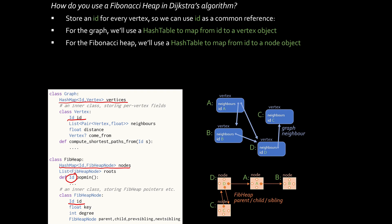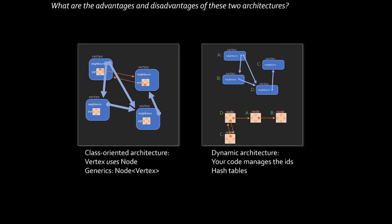So, these are two totally different software architectures. We could implement it using a class-oriented architecture with a using relationship. Each vertex object uses a priority queue node object, and this requires generics to do it properly. Or alternatively, we could have a decoupled design, making heavy use of hash tables and keys, and it would be our code, which is managing the key space. It's interesting to think through what are the advantages and disadvantages of these two architectures. It really depends on the larger context within which you're building this system.